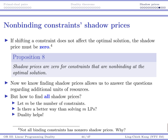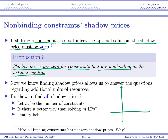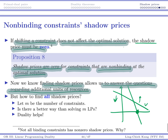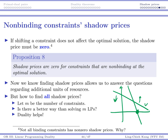Whenever we are talking about a constraint shifting and it does not affect an optimal solution, we would expect the shadow price to be zero. The shadow price would be zero if your constraint is non-binding at your optimal solution. If your constraint is non-binding at your optimal solution, then making it larger or smaller does not change your optimal solution — there is no impact. Finding shadow prices allows us to answer questions regarding an additional unit of resources.